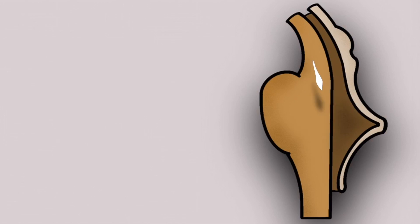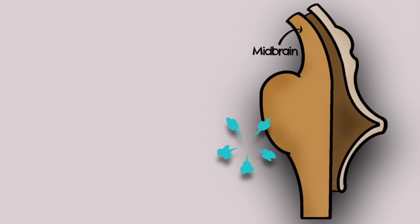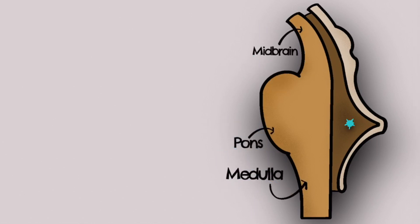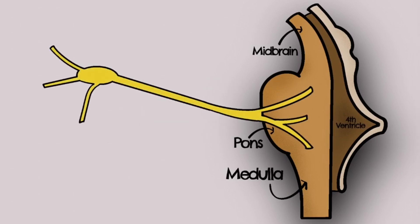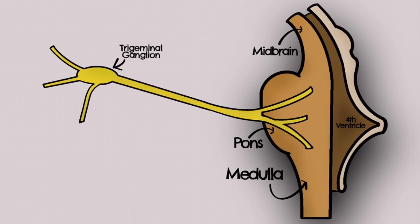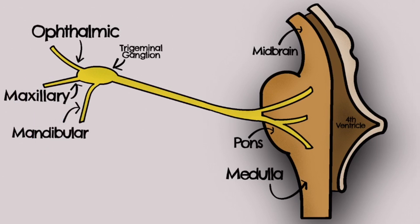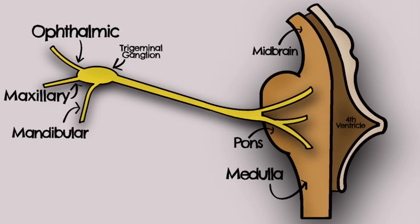Let's revisit the structures in a sagittal view of the brainstem. To reorientate you, here is the midbrain, pons, and medulla, with the fourth ventricle lying immediately posterior to the structures. The structure in yellow is the trigeminal nerve, which converges from its three divisions to form the trigeminal ganglion. To recap, the three main branches of the trigeminal nerve are the ophthalmic, maxillary, and mandibular division. These divisions converge at the trigeminal ganglion and continue as a spinal route.